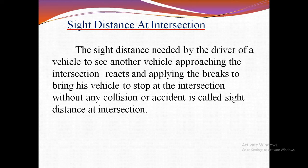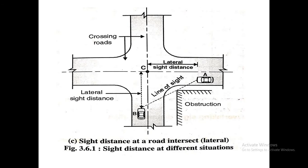We need to react and apply the brakes without any collision. The sight line is obstructed by structures or other objects at the corners of the intersection. The area of unobstructed sight formed by the line of vision is called sight distance. We have a diagram — when we are moving from B to C towards the junction and another vehicle is coming from A to C at the junction point, if we cannot see that other vehicle, these two will collide at that point.